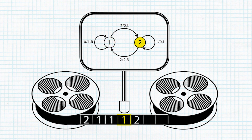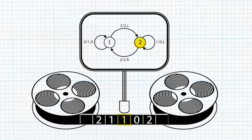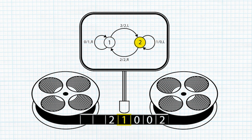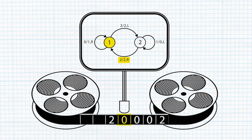Now that we're in state number two, watch what happens. The playhead reads one, so we change that to a zero, step left and loop back to state two. This continues — one becomes zero, move left, state two — until the playhead encounters the number two again. Two stays two, but now we step to the right and go back to state one. We're right back where we started.